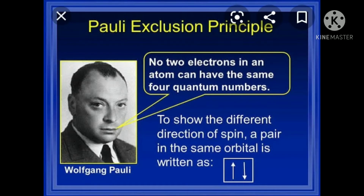Since two electrons placed in any given orbital have the same values of principal quantum number n, azimuthal quantum number l, and magnetic quantum number m, it follows from this rule that they should differ in their spin quantum number value. We can say the rule in other words: an orbital can accommodate a maximum of two electrons only, and those two should have opposite spin.